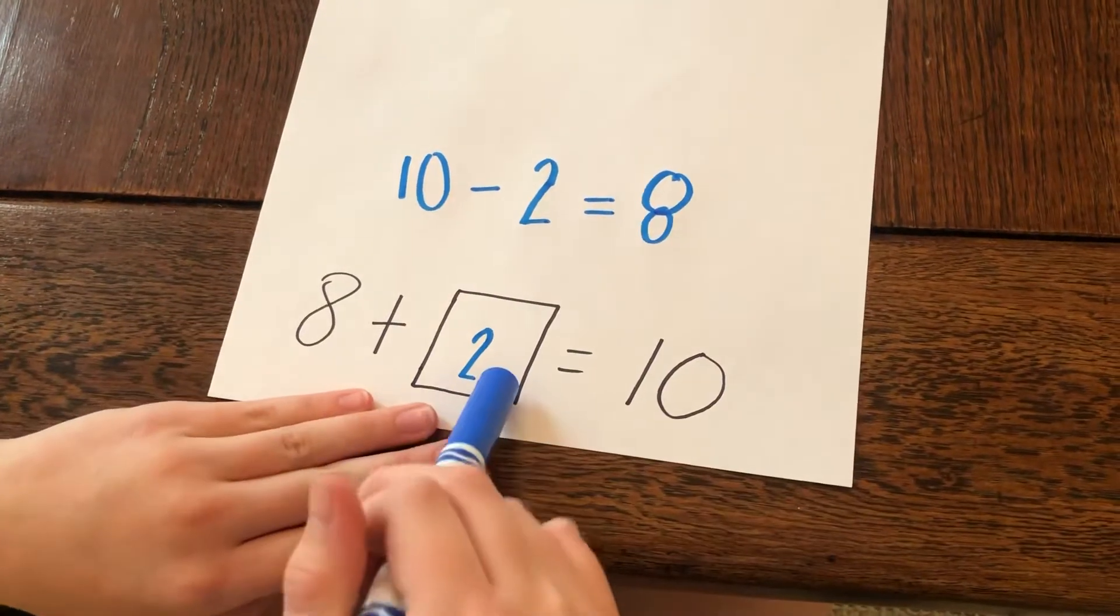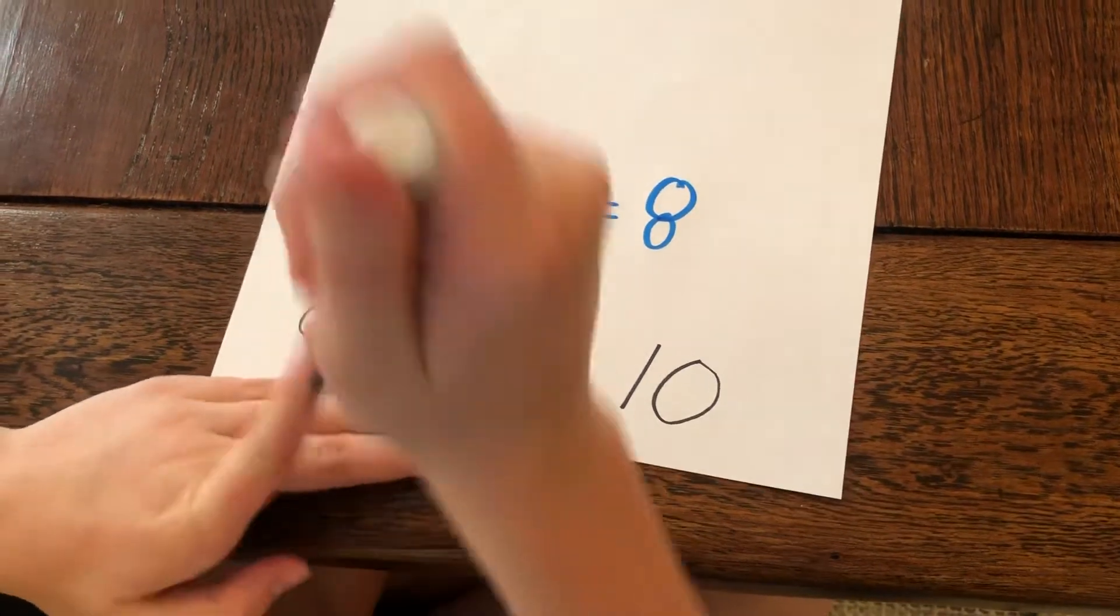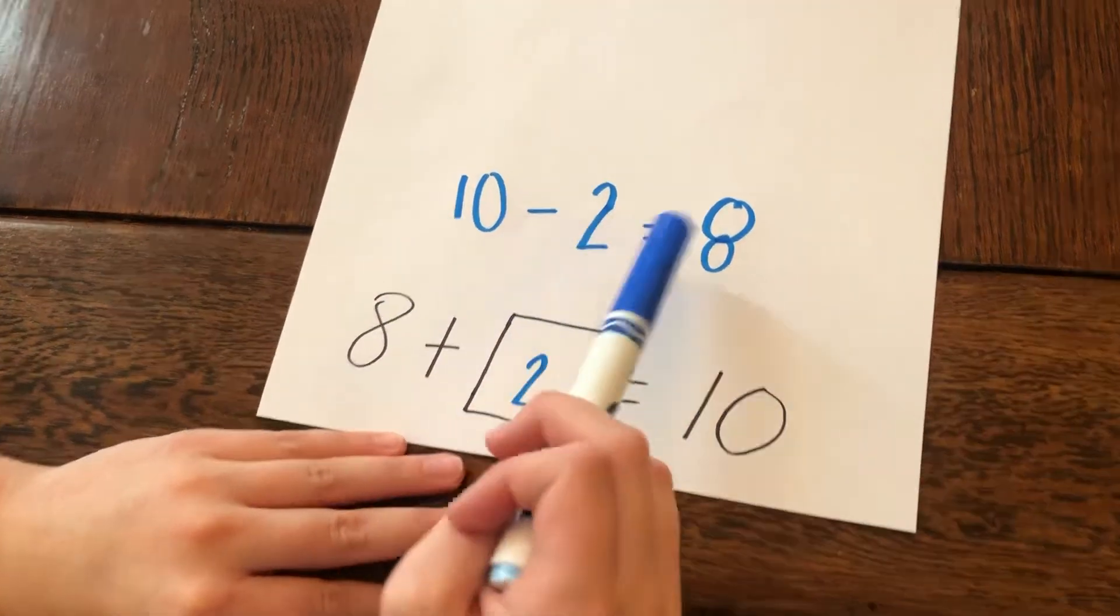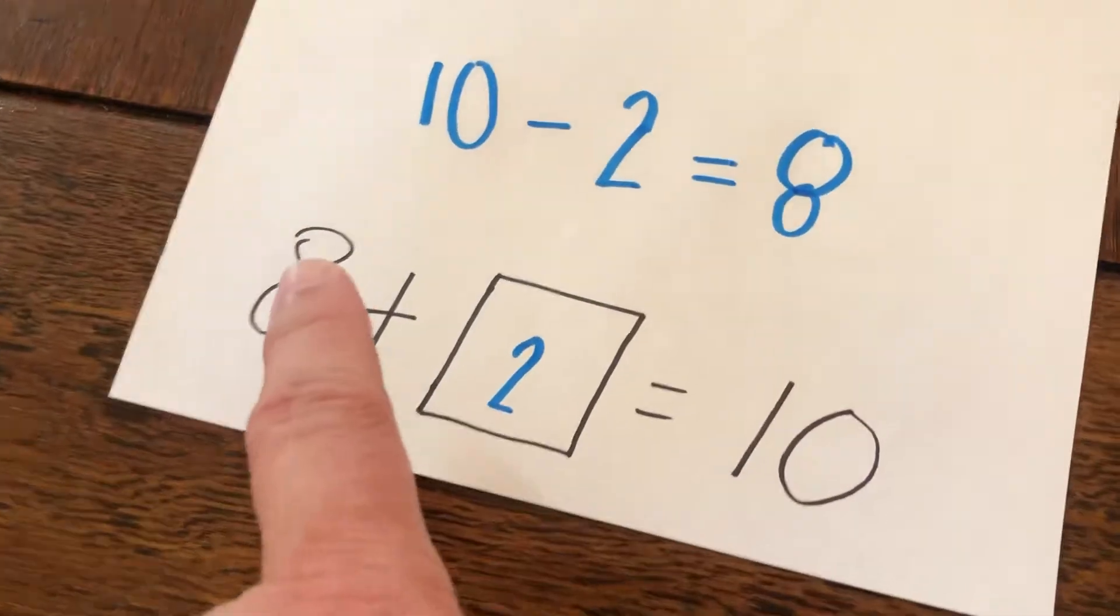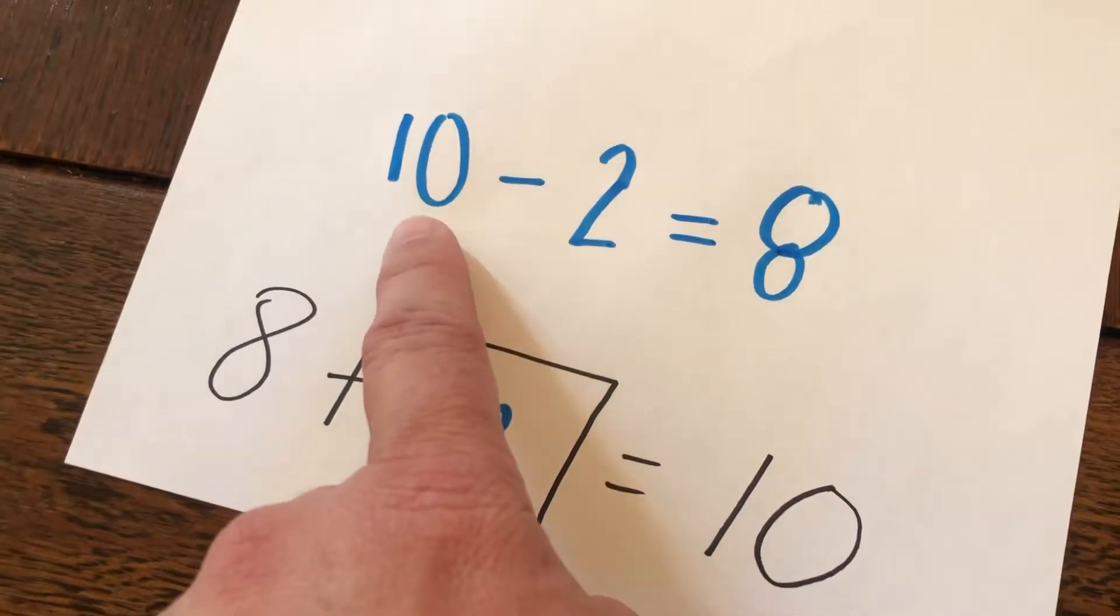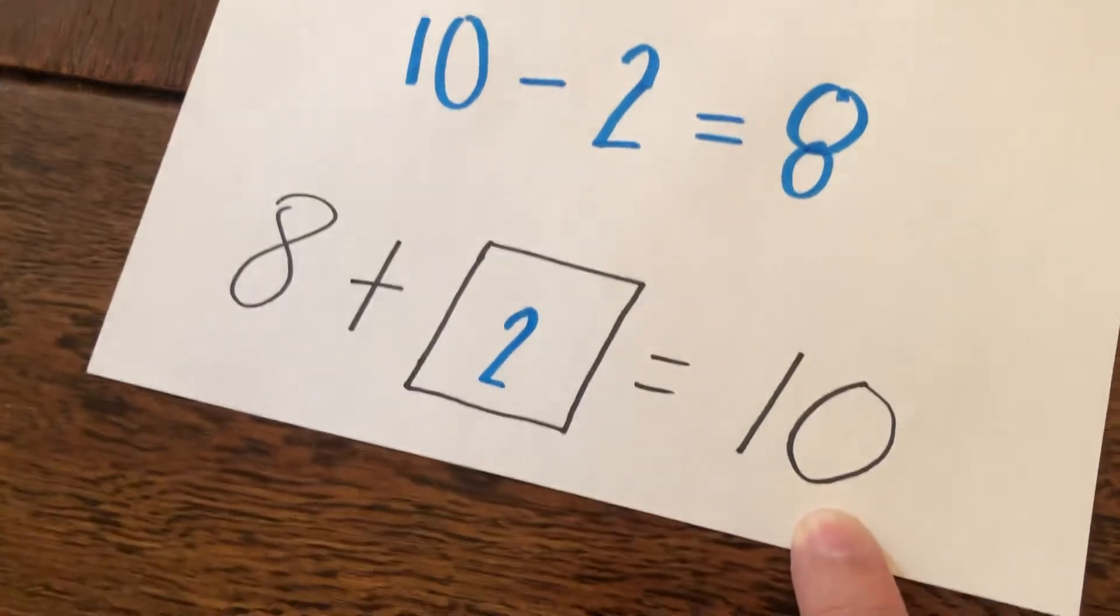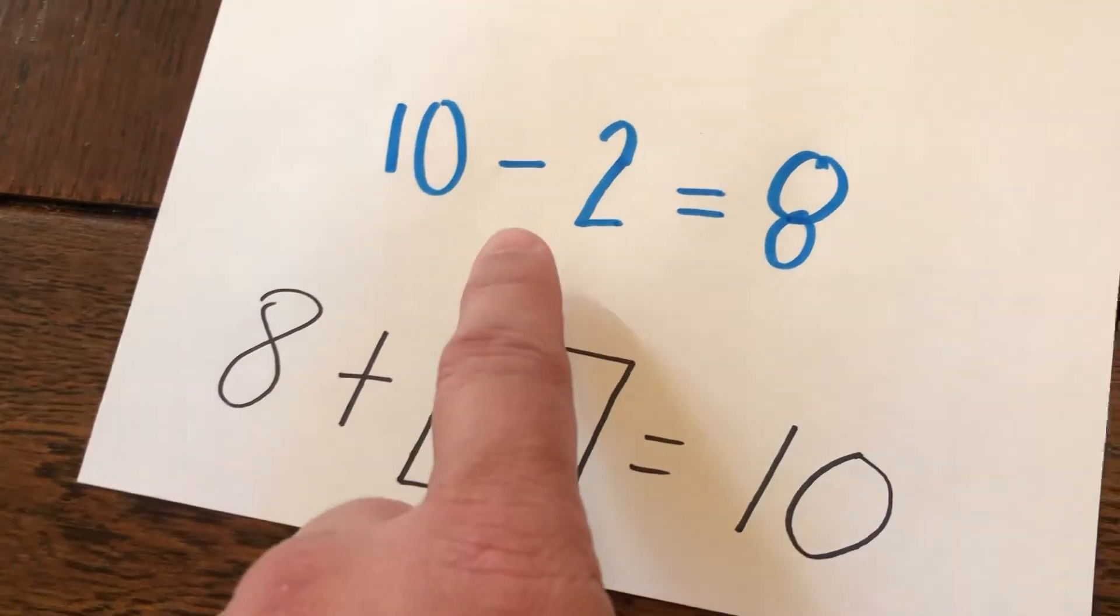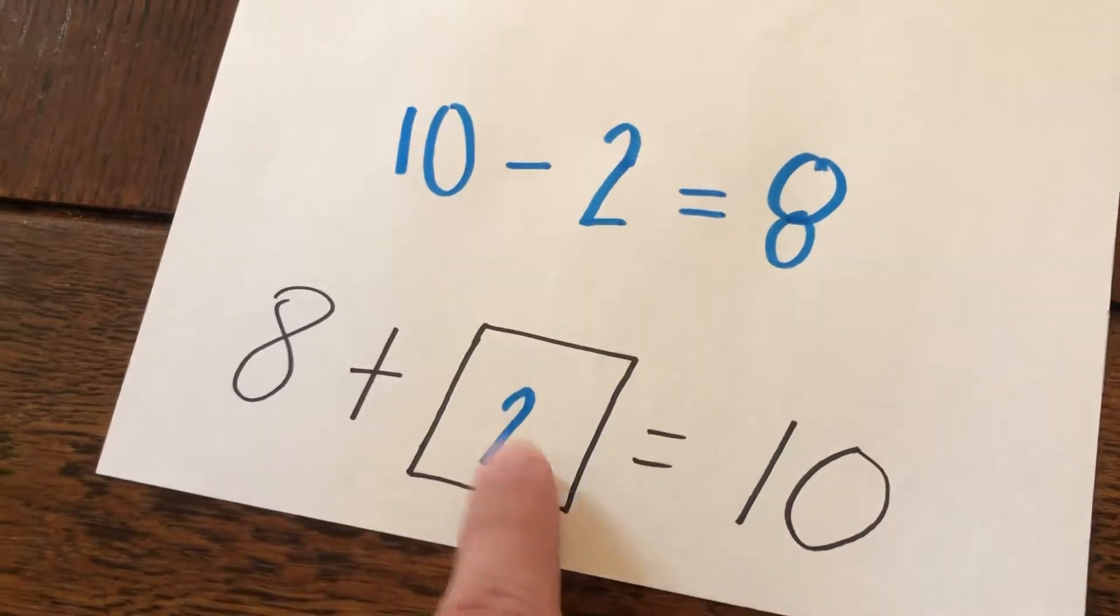if we switch this around, I know that 8 plus 2 equals 10 and I know that 10 minus 2 equals 8. And I see the double switcheroo here where the 8 goes from the front to the back and the 10 goes from the front to the back and you switch the sign from a plus to a minus. I see it.